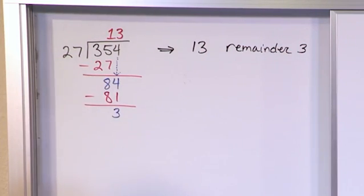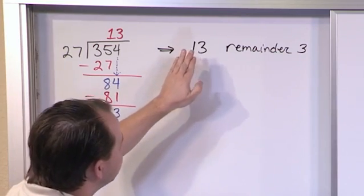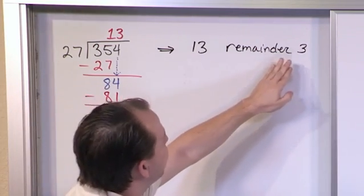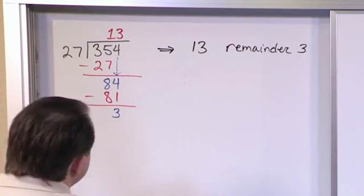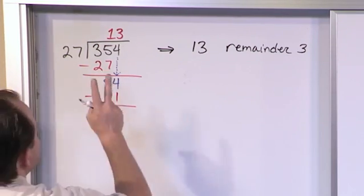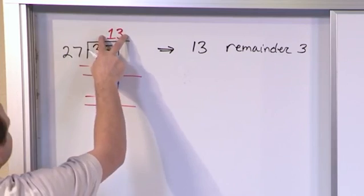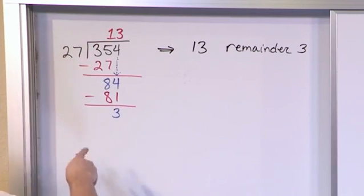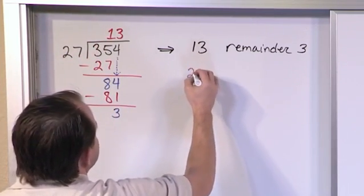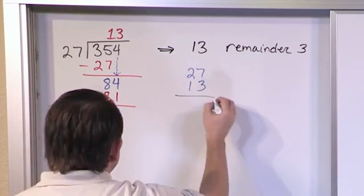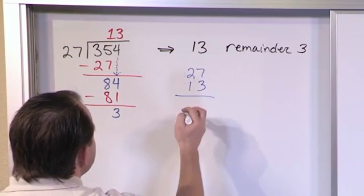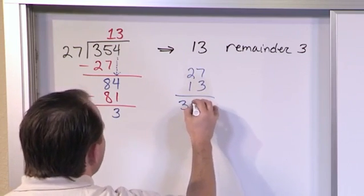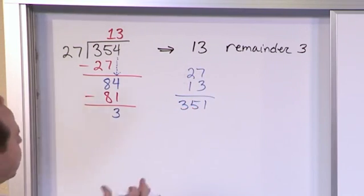So that means that it can go 13 times. But I will have 3 left over after it goes and fits those 13 times. And to prove that to you to kind of show you this to check it so to speak. If you take 13 times 27 you should get something that makes sense. So let's do 27 times 13. When you do this and you do all the multiplication you're going to get 351 as an answer. Notice that this is